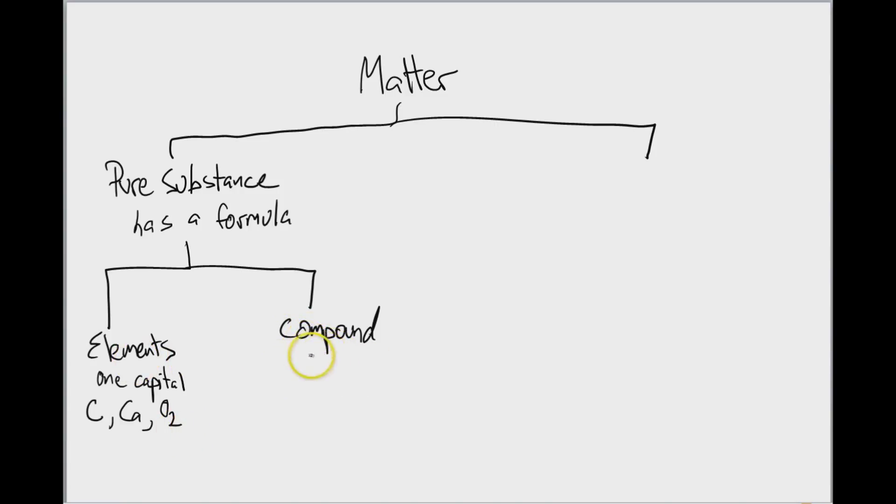Now what about compounds? Well compounds are anything that is a combination of several different elements. Meaning that its formula has more than one capital letter. For example, H2O, good old water. There's two different capital letters in this. Or, as a lot of the kids like, glucose. C6 H12 O6. Good old sugar. So those are all compounds. Very simple.